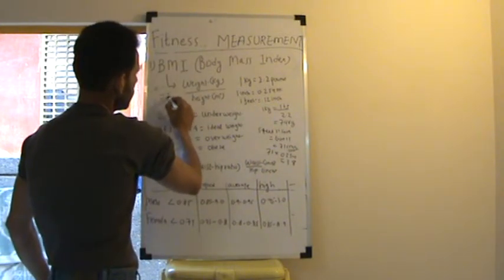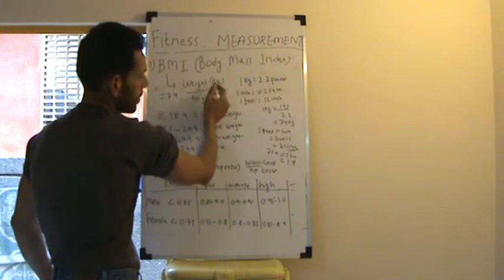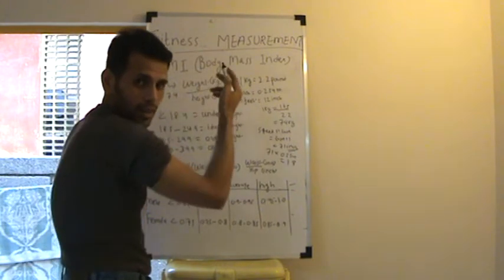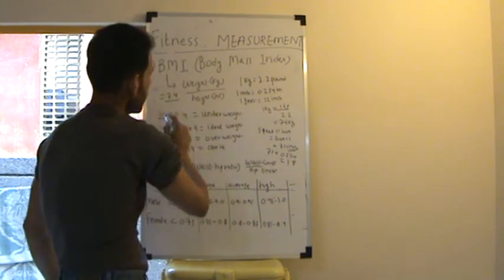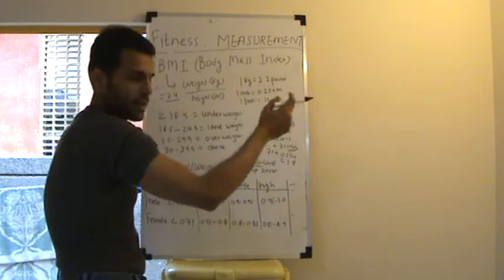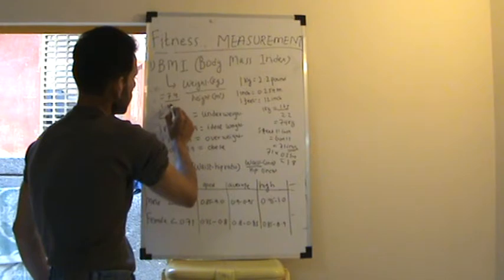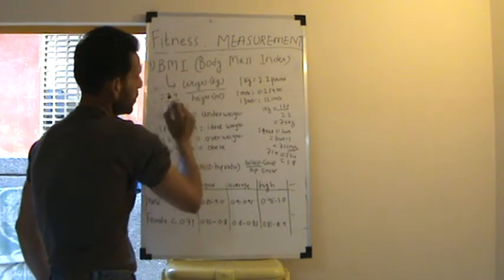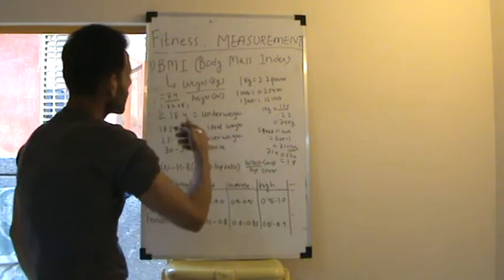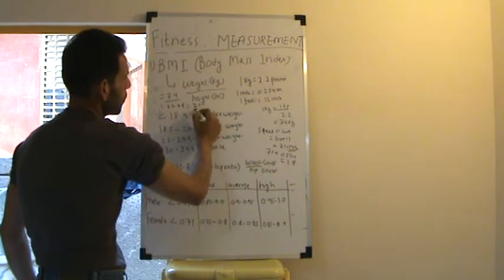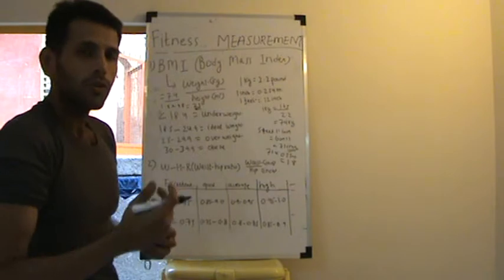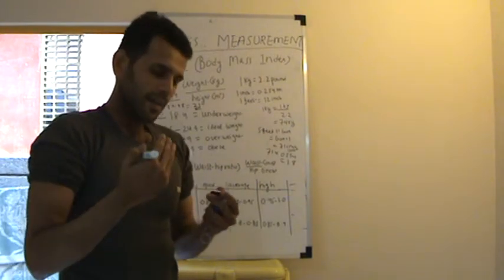74, that's my weight in kilograms, divided by height in meters squared, that is 1.8 times 1.8, which comes to a value of approximately 23.